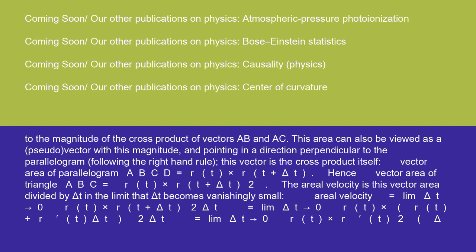This area can also be viewed as a pseudo-vector with this magnitude and pointing in a direction perpendicular to the parallelogram, following the right-hand rule. This vector is the cross product itself. Vector area of parallelogram ABCD equals r(t) times r(t + delta t). Hence vector area of triangle ABC equals r(t) times r(t + delta t) / 2. The aerial velocity is this vector area divided by delta t in the limit that delta t becomes vanishingly small.